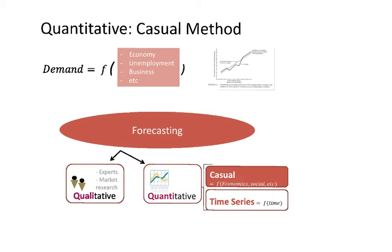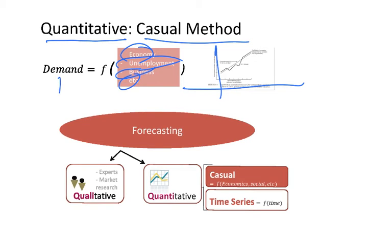So when we look at the first one, it's called quantitative casual method. So I will be looking at a function which looks at different variables. Could be the economy, could be the unemployment, business, etc. And with that, I'm going to try to calculate the demand. When I call to demand, I'm talking to passengers. So demand is how many passengers are willing to travel in that route.